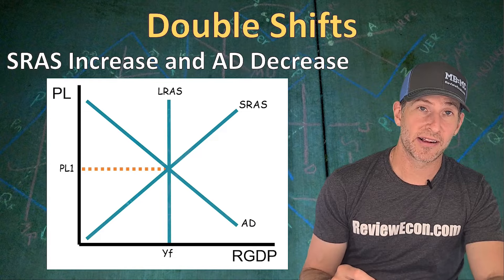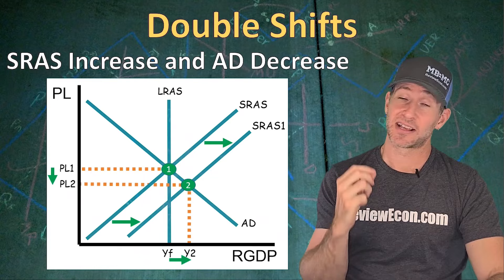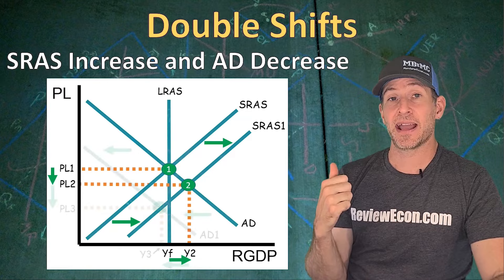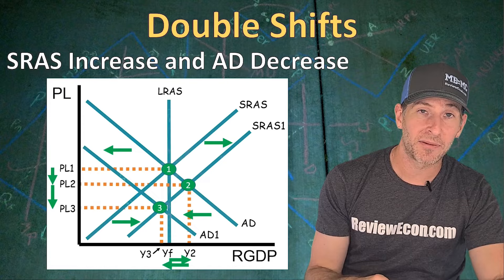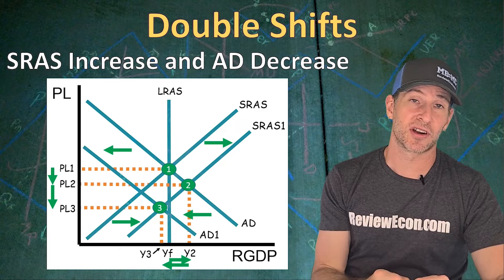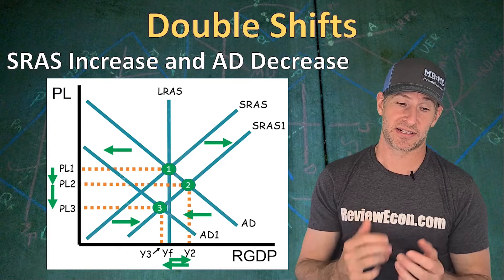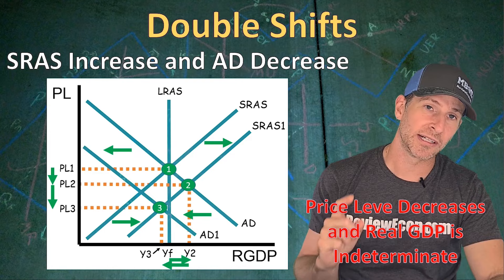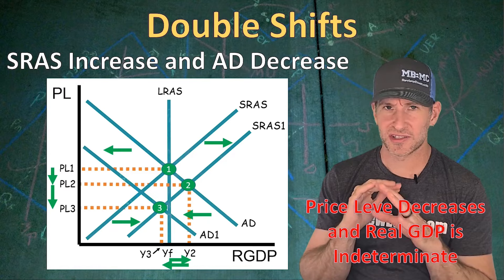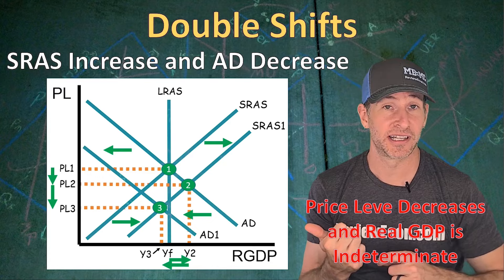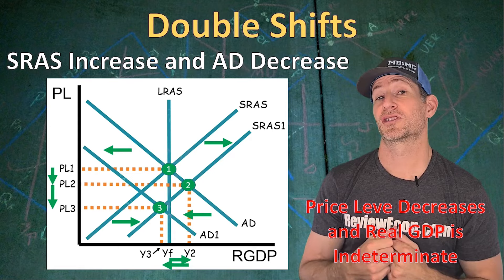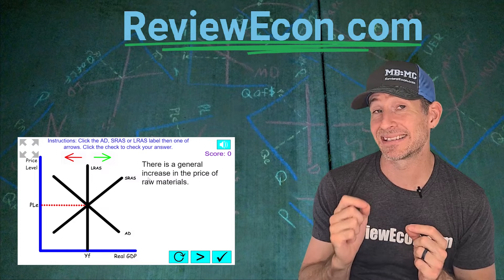If instead we see an increase in the short run aggregate supply curve but a decrease in the aggregate demand curve, the SRAS shift still increases output and decreases the price level. But the decrease in aggregate demand pushes the price level all the way down to PL3 and real output to Y3. This time both shifts decreased the price level, but for real output the first shift increased it and the second decreased it. As a result, the price level is certain to decrease, but real output is now indeterminate. When solving these double shift problems, just graph it out — one axis will be indeterminate because one shift increases it and the other decreases it, but the other axis will be determined because both shifts push it in the same direction.